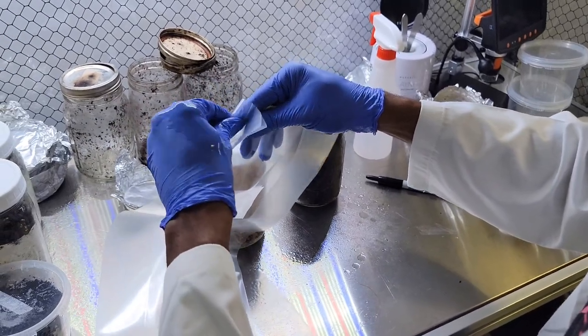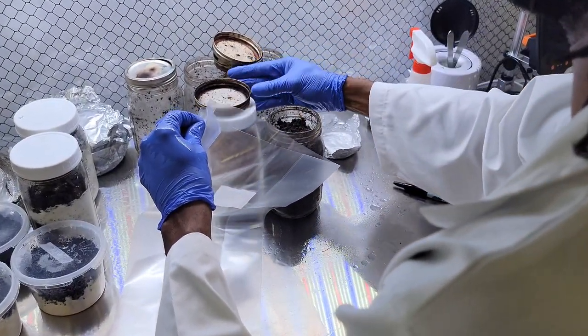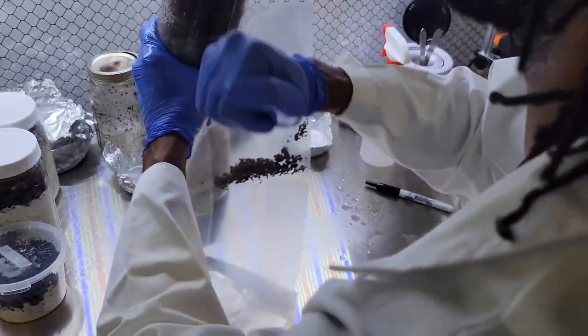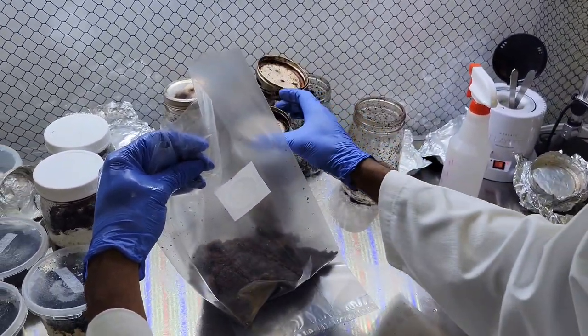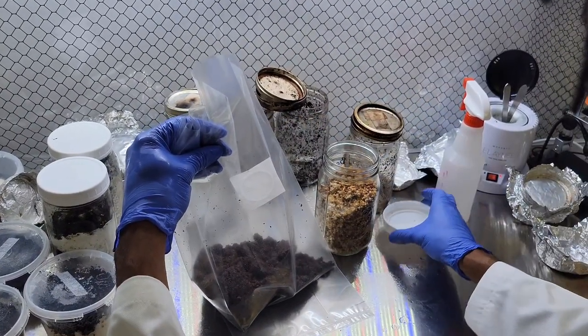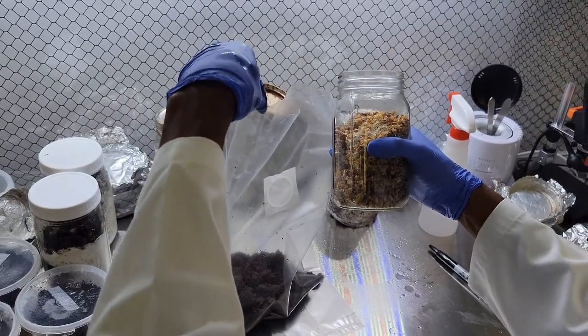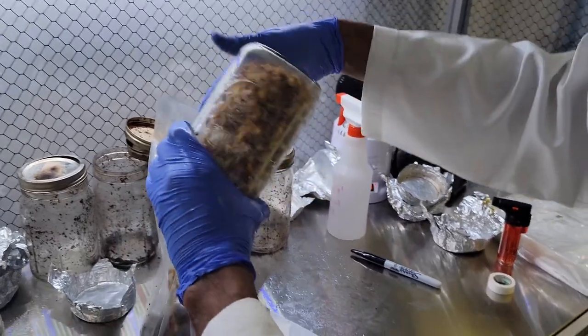This time we're going to take the substrate, this is master's mix, and then we're also going to take the grain spawn. We're going to mix it in the bag and then we're going to pour them back into the jars that they came from. So that's a one-to-one ratio because we use one jar of each. This is lion's mane by the way.